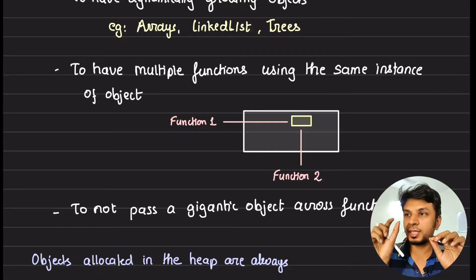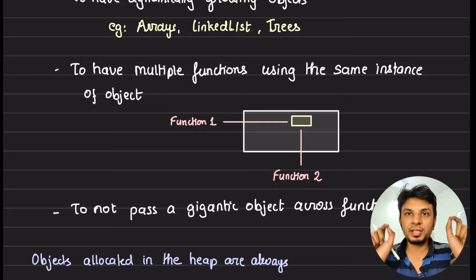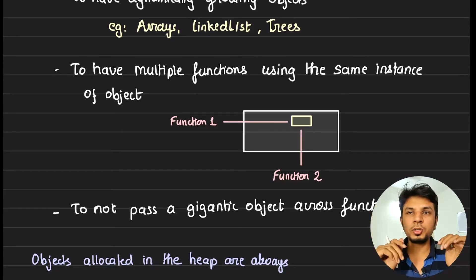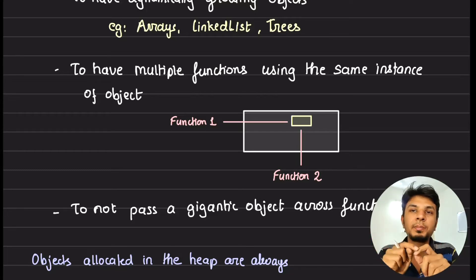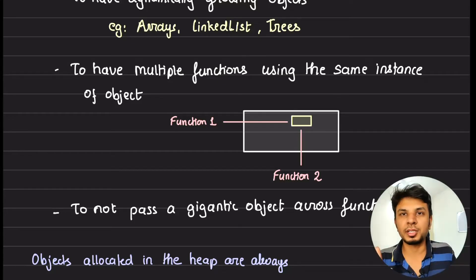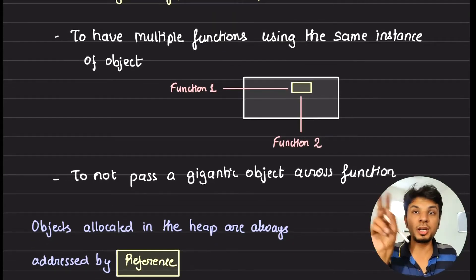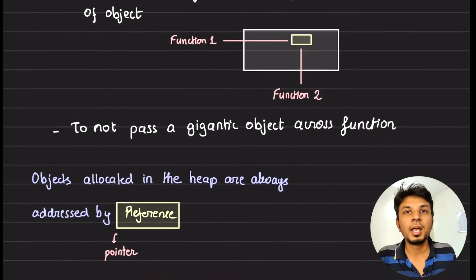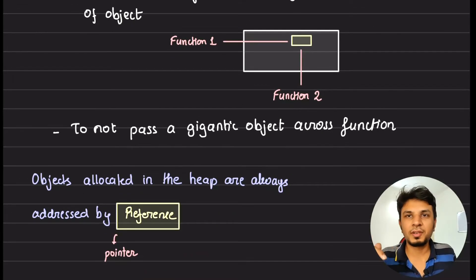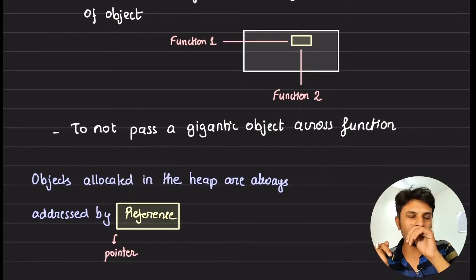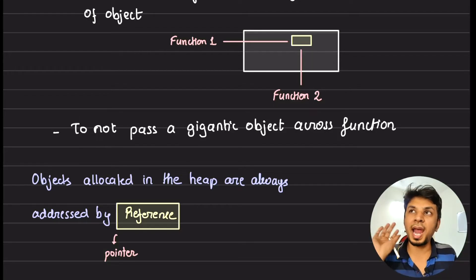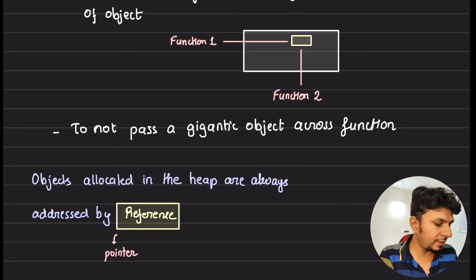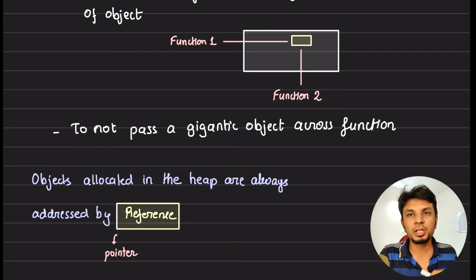Dynamically growing objects are almost always allocated on the heap. Reason number three: you want multiple functions to use the same instance of an object. Because heap is a central storage in RAM, you can pass the reference across functions. Two threads executing functions can simultaneously update or access the same object without passing a gigantic chunk of data across functions — giving better performance. Objects on the heap are always addressed by reference, essentially a pointer.